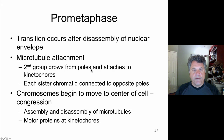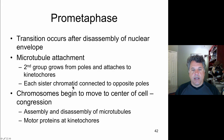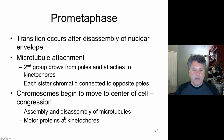Microtubule attachments grow from the poles and begin attaching to kinetochores. Eventually each sister chromatid will be connected to opposite poles of the cell — each replicated chromosome has two chromatids, each connected to opposite poles via kinetochore microtubules. The chromosomes are moved to the center of the cell as tension from opposite poles equalizes, a process called congression. There is constant assembly and disassembly of microtubules, with motor proteins at the kinetochores involved in movement.